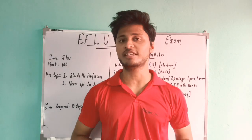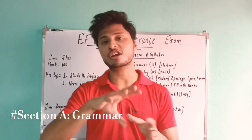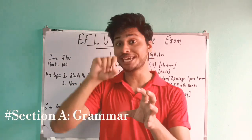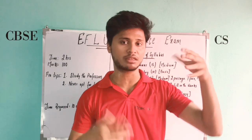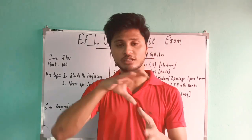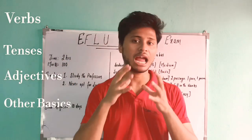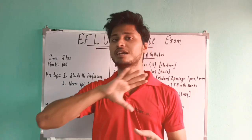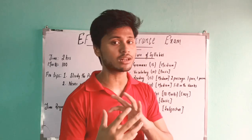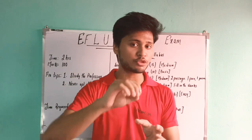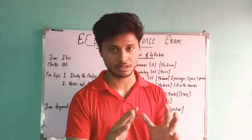Let us get started with Section A, which is Grammar. Grammar consists of 15 marks and is very medium in nature. If you are a student from a CBSE or ICSE school, it gets very easy — all you need to know is verbs, tenses, adjectives, and the very basics of grammar. You can tackle 12 to 13 questions with ease. If you want to be foolproof, just go through the grammar books of Classes 9 and 10 and you are ready to go.